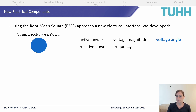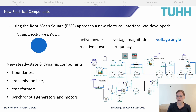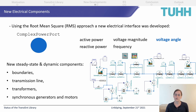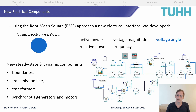With this complex power port, we were able to model the phenomena I described. We had to redefine existing models and components, but also develop some new steady-state and dynamic components — for example, boundaries, transmission lines, transformers between different grid levels, and synchronous generators and motors, both in consumer and power producer models.